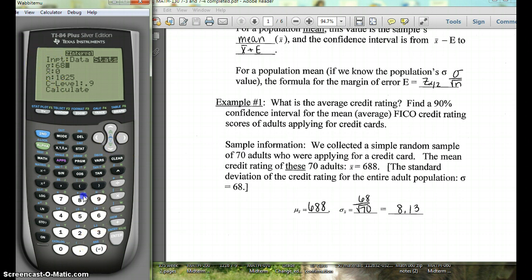So put in 68, then it asks for the mean which was 688, and then it asks for the number of people we sampled in our n. So that was 70.